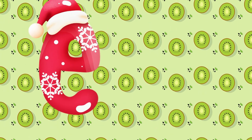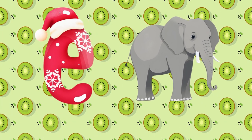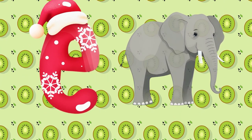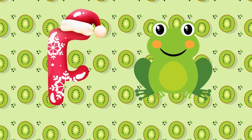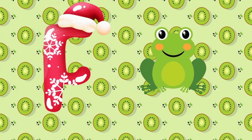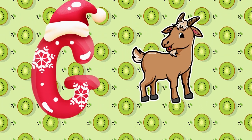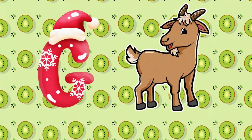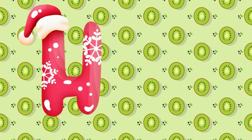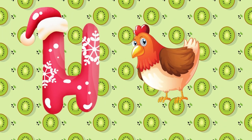E is for elephant, e-e-elephant. F is for frog, f-f-frog. G is for goat, g-g-goat. H is for hand, h-h-hand.